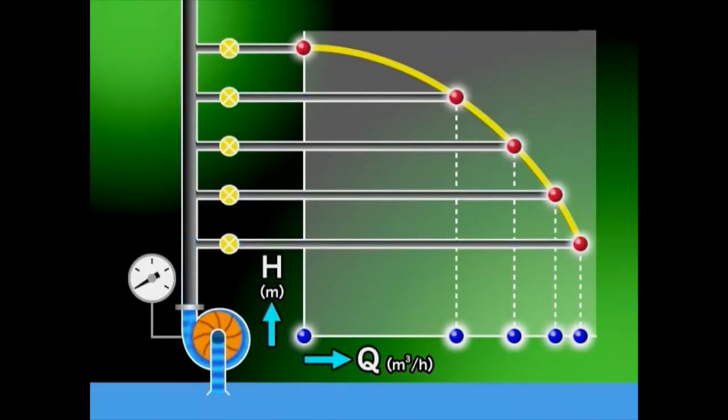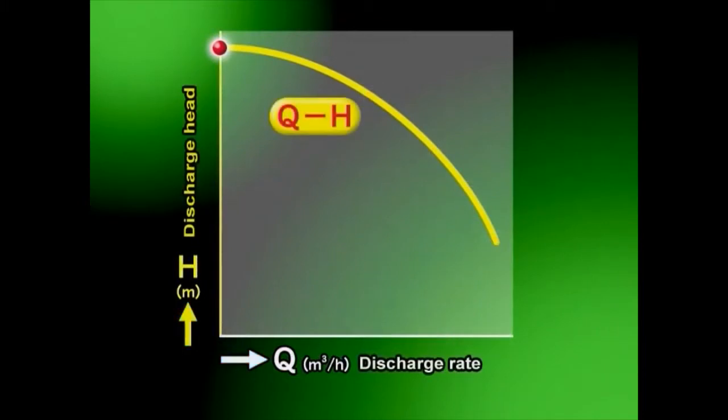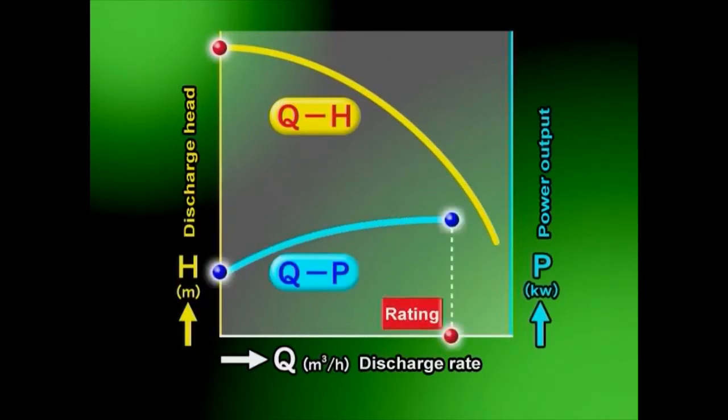Pump output refers to an amount of work with which a pump pushes up a certain discharge amount of water to a certain pump head. The relation between the pump output, P, and discharge amount, Q, also shows the pump's performance capability.